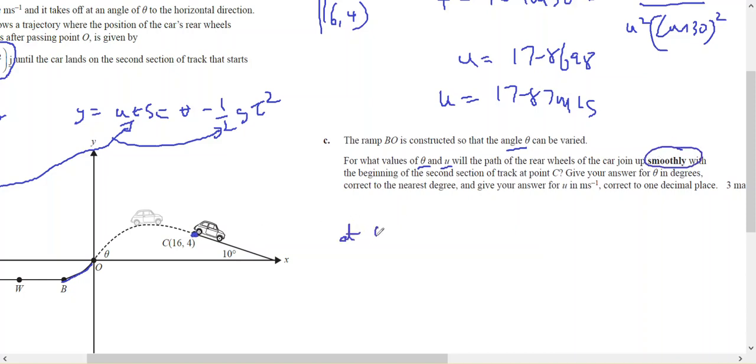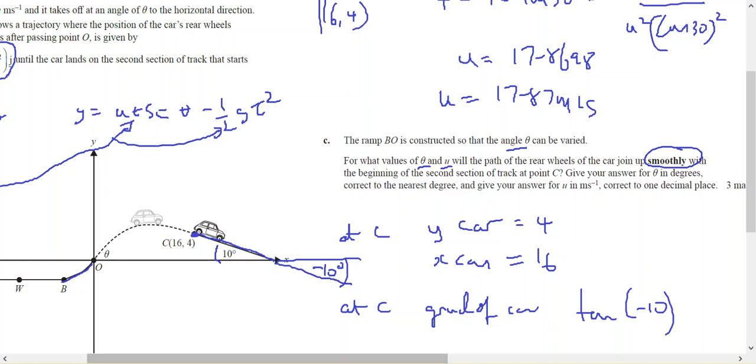So at c, y of the car equals 4 and x of the car equals 16. And at c, the gradient of the car is equal to the tan of negative 10 degrees. Because the gradient of this slope here, if that's 10 degrees, it's making a negative 10 degree angle. So the tan of negative 10 is negative 0.1763 using my calculator.